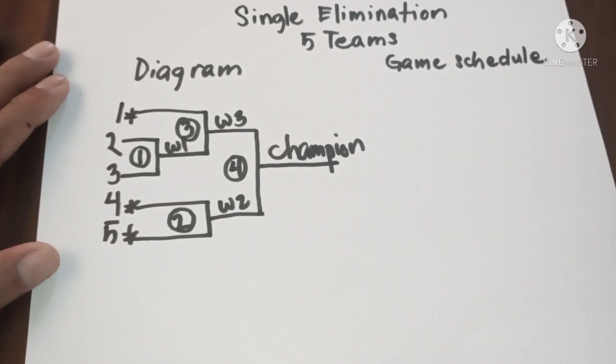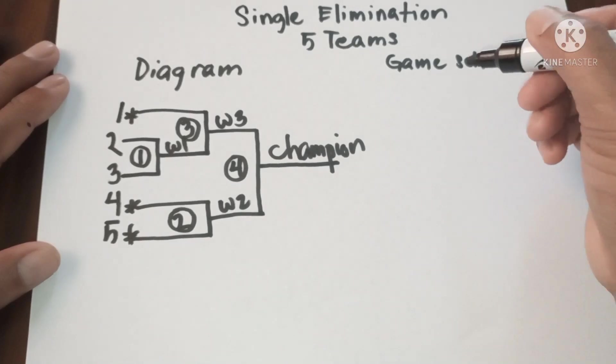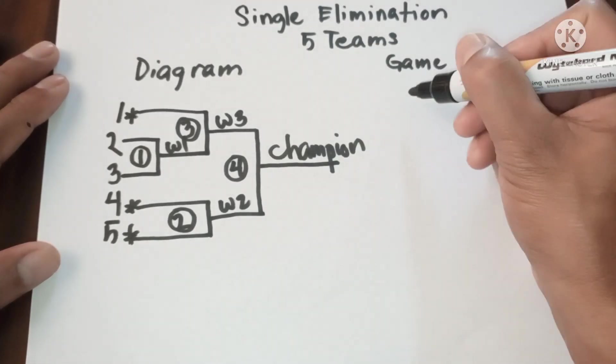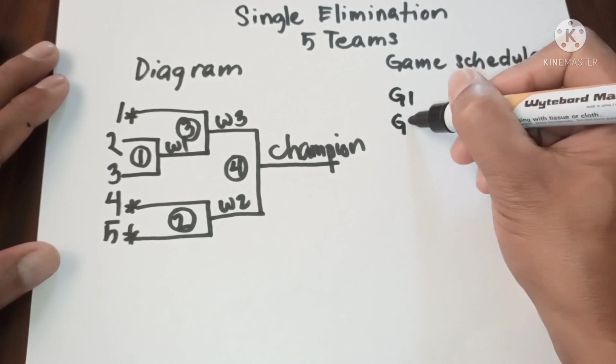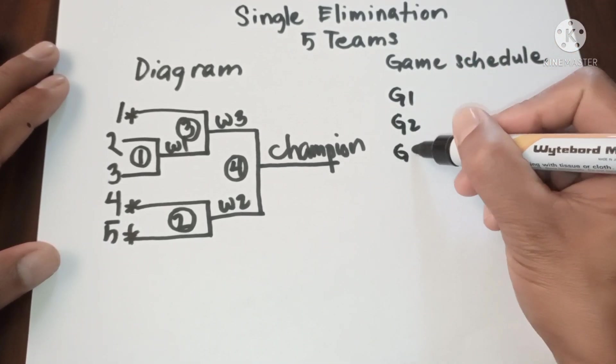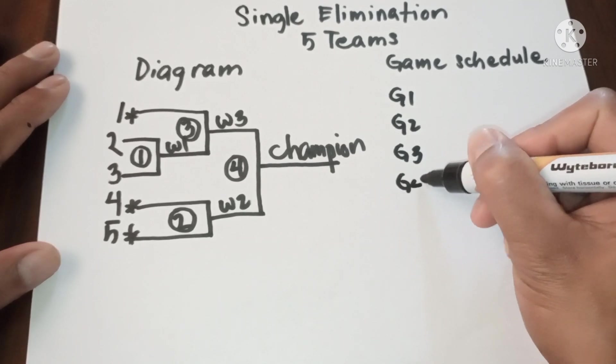Now let's proceed to game schedule. So we have four games: game one, game two, game three, game four.